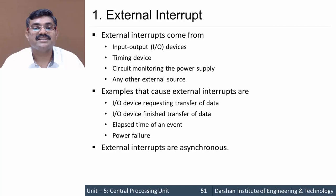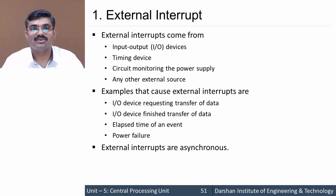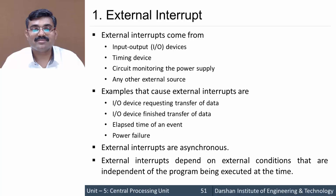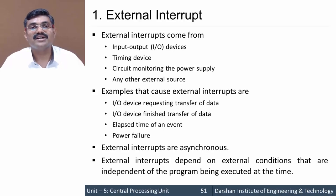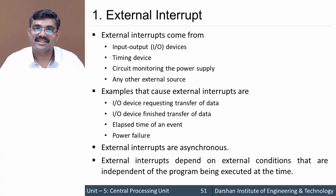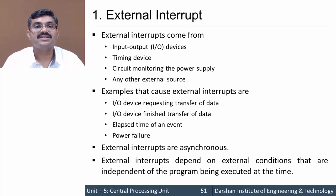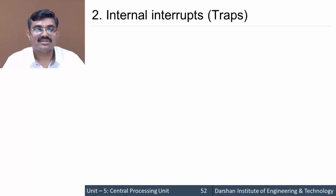External interrupts are asynchronous because they do not work on the CPU clock — they never work in synchronization with the CPU. External interrupts depend on external conditions that are independent of the program being executed, meaning the main program has no concern with when an interrupt will occur; it can occur at any time, causing the ISR for the corresponding interrupt to execute.